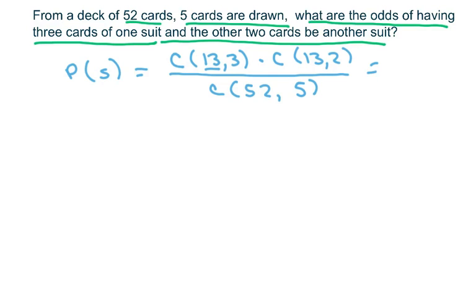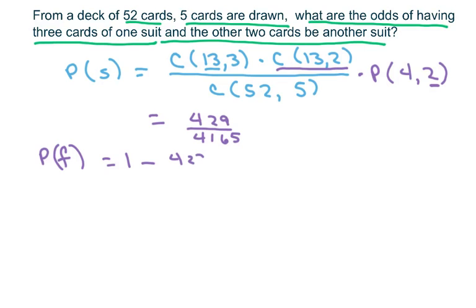And then we've got to also do, in this case, the permutation of 4 choose 2. Because there's 4 suits and we only choose 1 here, so we have 2 more to go. So we're doing all the possible arrangements of the suits. And what you're going to get is the total. If you put all this in the calculator, you're going to get 429 over 4165. Now we want the probability of the failure, which is going to be 1 minus 429 over 4165.